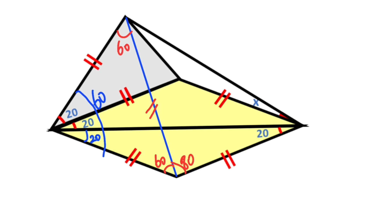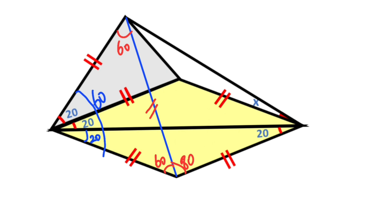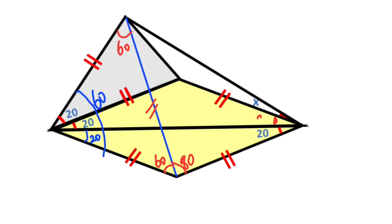80 degrees are left here. If you focus on this triangle, it is an isosceles triangle with a vertex angle of 80 degrees, so the base angles must be equal at 50 degrees. We know that here is 20 degrees, therefore the base angles equal 50 degrees, which means angle x equals 10 degrees.